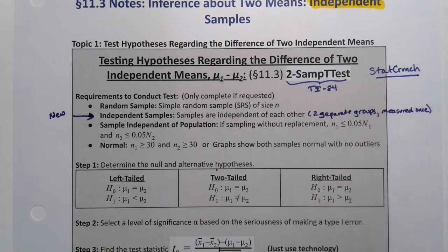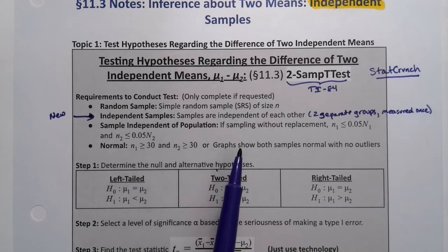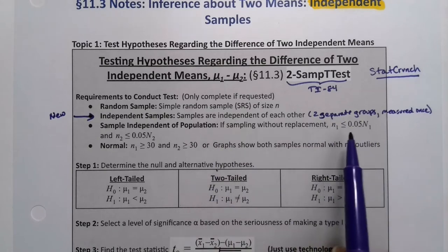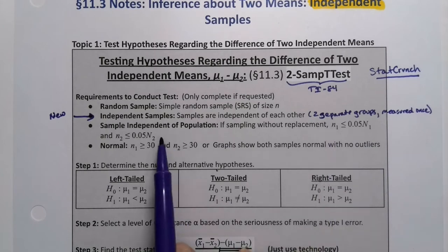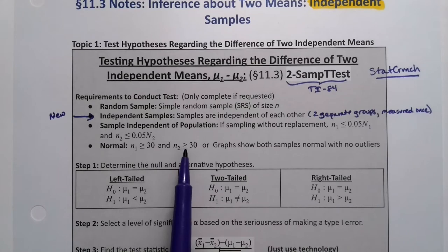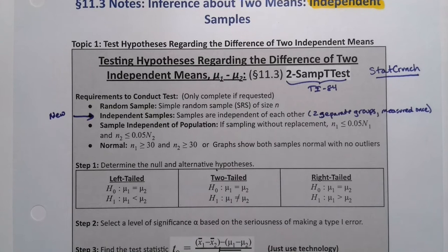These are not matched pairs; these will be random people that have nothing to do with each other, in two separate groups measured one time. For the remaining conditions, the sample must be independent of the population — and we have to do it double time, for both group one and group two. For normality, you either need both sample sizes greater than 30 or a graph for each sample showing normality with no outliers.